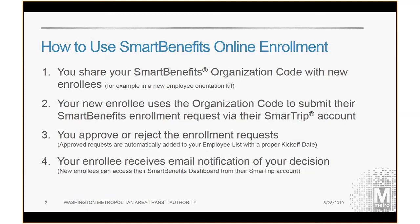It's a four-step process. First, as the employer, you need to share your Smart Benefits organization code with new enrollees. You could do this, for example, via a new employee orientation kit. Second, your new enrollee will use the organization code to submit their Smart Benefits enrollment request via their Smart Trip account.